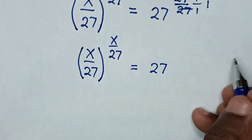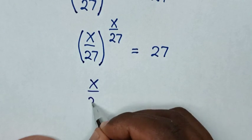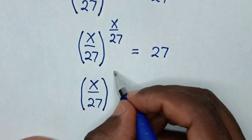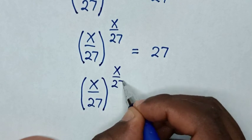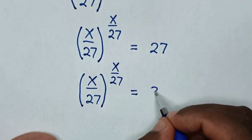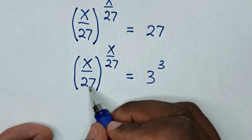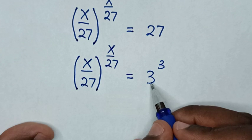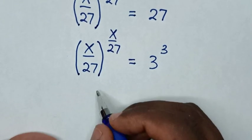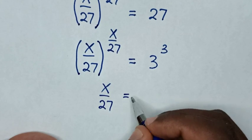In the next step, x over 27, to the power of x over 27, equals 27, which is the same as 3 power of 3. We compare the base: x over 27 is equal to 3, and the power x over 27 is also equal to 3. So it will be x over 27 is equal to 3.